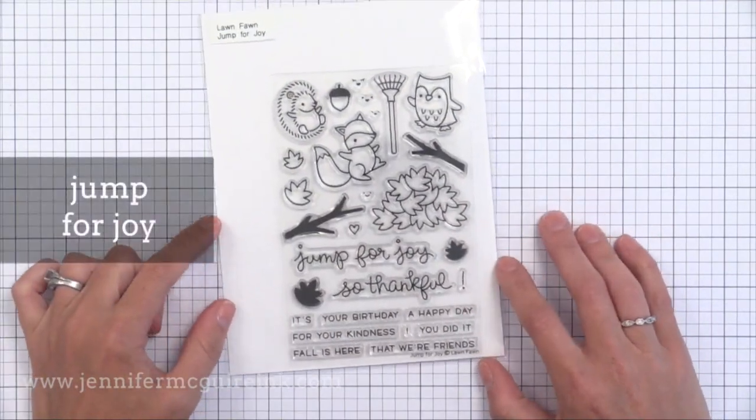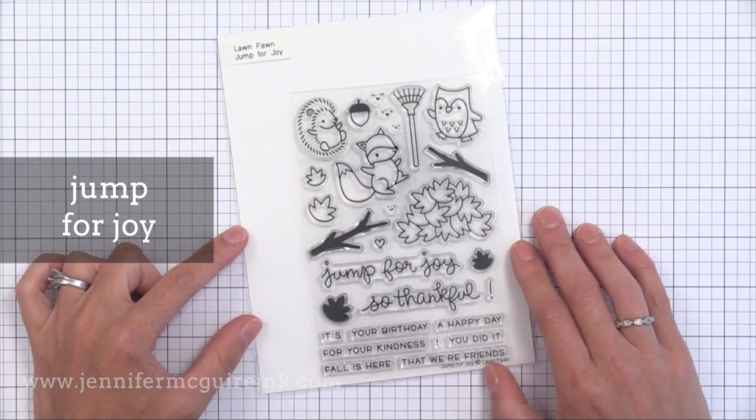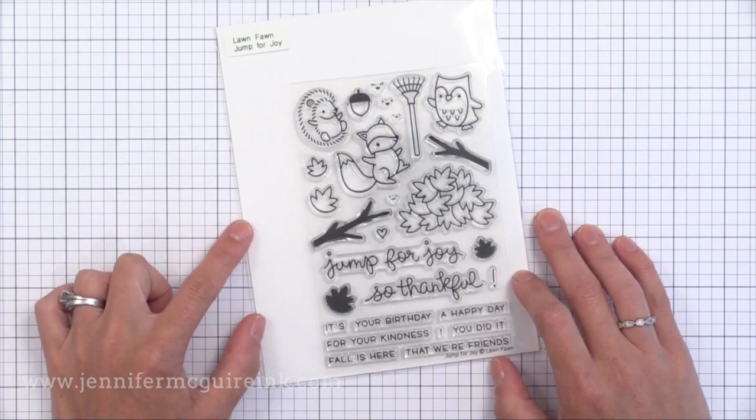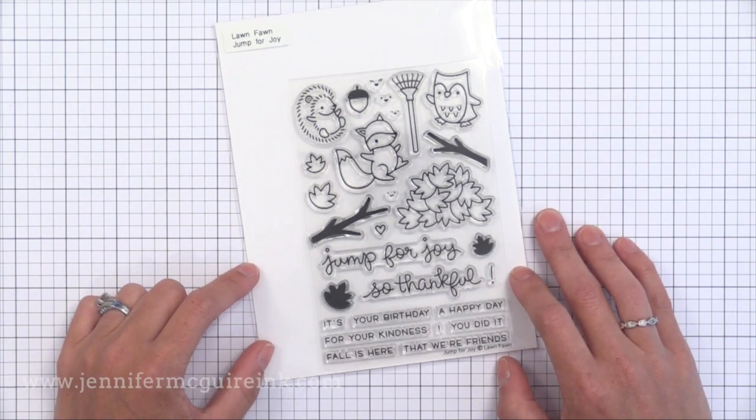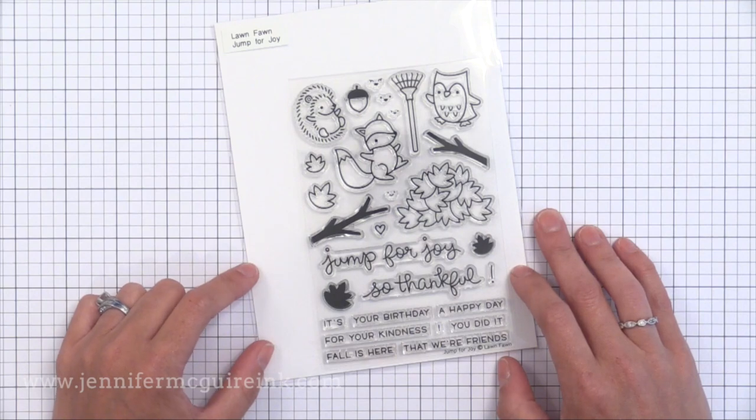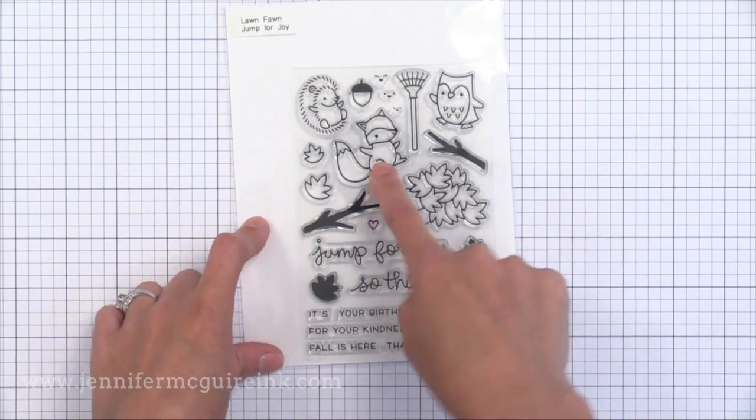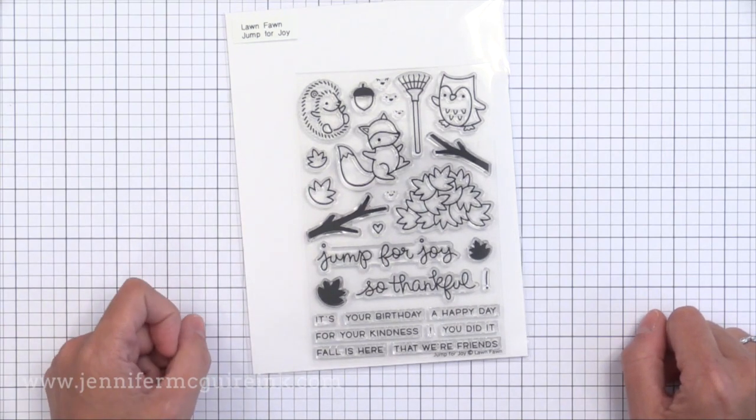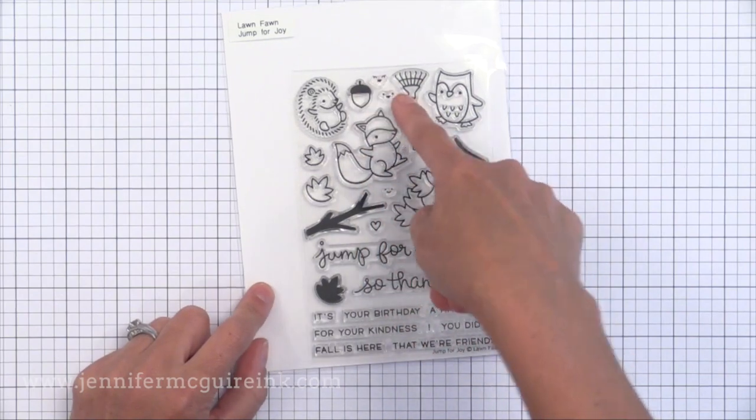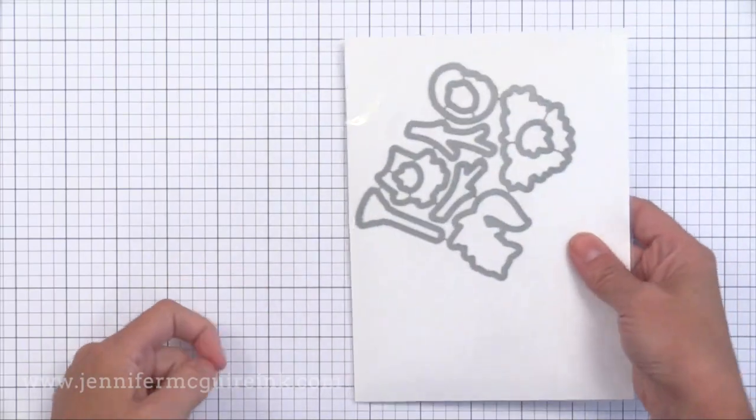As far as fall theme stamps we have Jump for Joy. This one has been popular already. You can do the little pile of leaves and even put little smiley faces on all the little leaves. You can have the animals jumping into the pile maybe using one of the slider dies from Lawn Fawn. So the little animals slide into the pile of leaves. Or you can even put little action wobblers on them so they jump into the leaves. The sentiments are wonderful. I really like that So Thankful. And then there's other things you can build up with it. It could be like So Thankful for Your Kindness. So you could use those throughout the year.